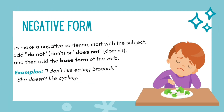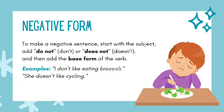Negative form: To make a negative sentence, start with the subject, then add do not (don't) or does not (doesn't), and then add the base form of the verb. Example: I don't like eating broccoli.